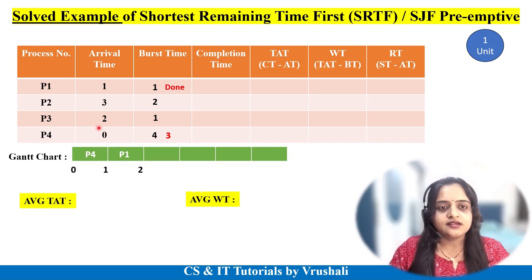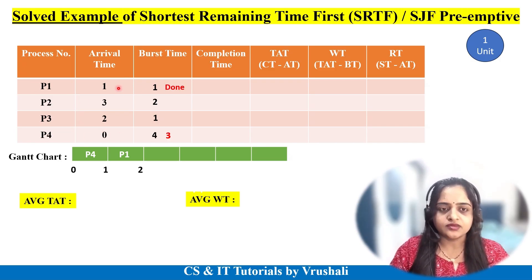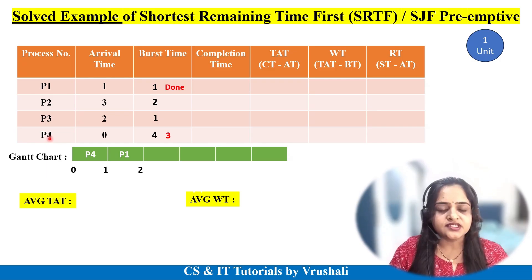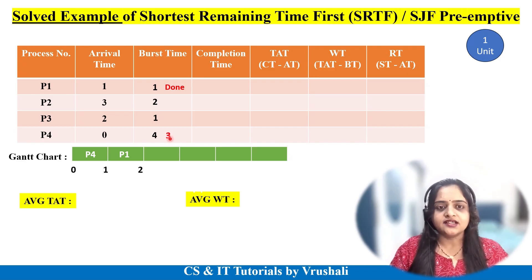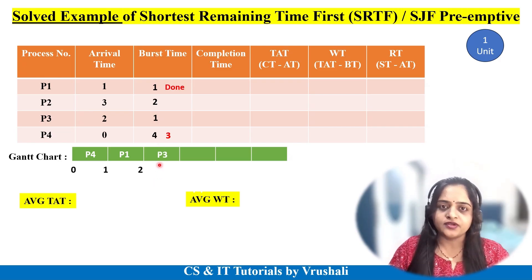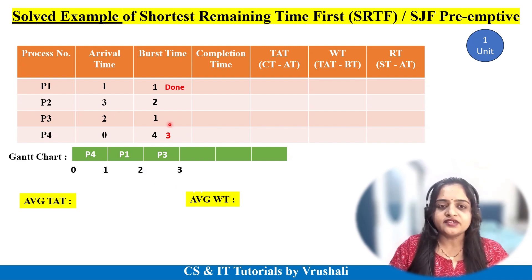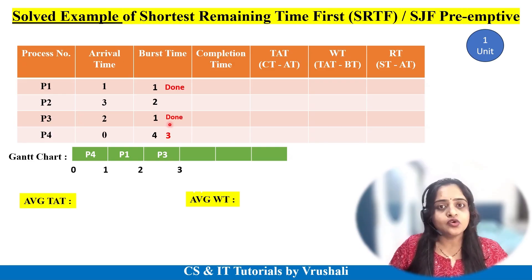Now check at time 2: P3 has arrived, and P4 is still present, so there are two processes — P3 and P4. P1 has already been executed. Check which process has the smallest burst time: P3's burst time is 1 and P4's remaining burst time is 3. The smallest is 1, so the CPU executes P3 first. So 1 plus 2 equals 3. P3 has completed its execution since it only required 1 unit of time, so there is no remaining time for P3.